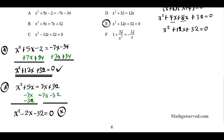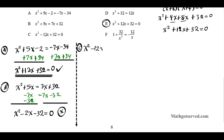Option C is already in standard form: x squared minus 12x plus 32 equals 0. This does not match because the 12 is negative here, while it is positive in our target. Now let's look at option D: x squared plus 32 equals 12x. Subtracting 12x gives x squared minus 12x plus 32 equals 0, which also does not match.